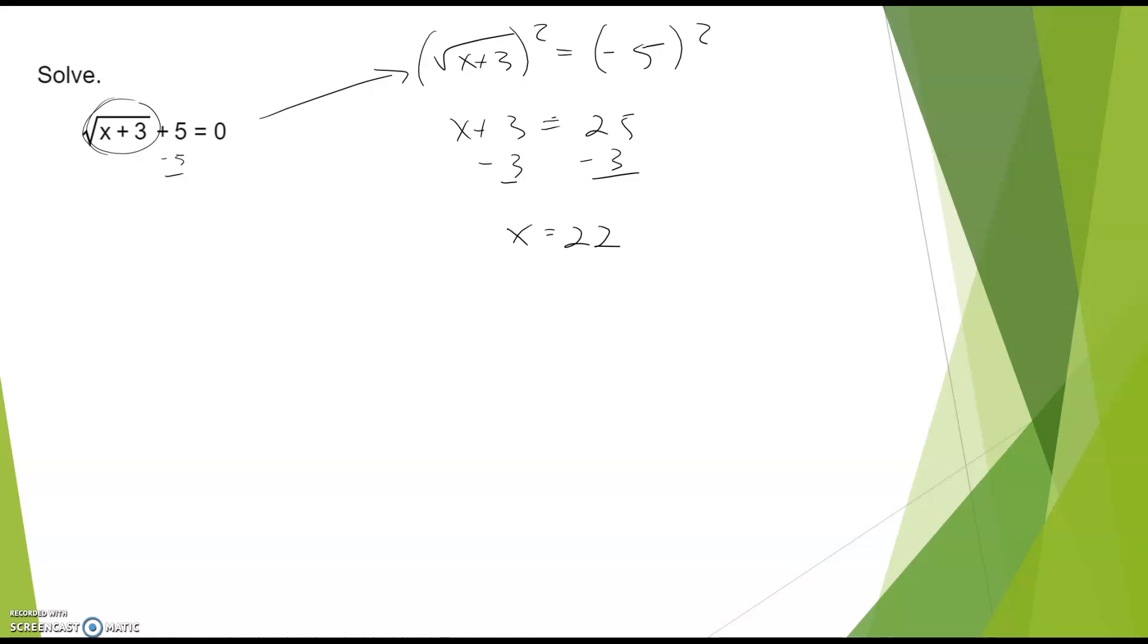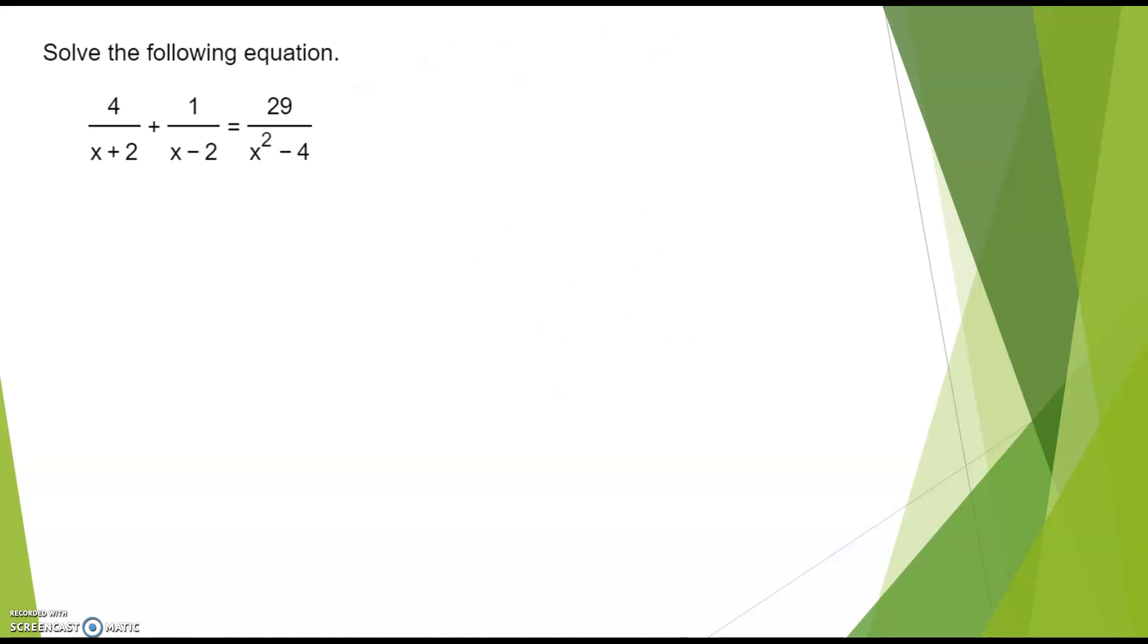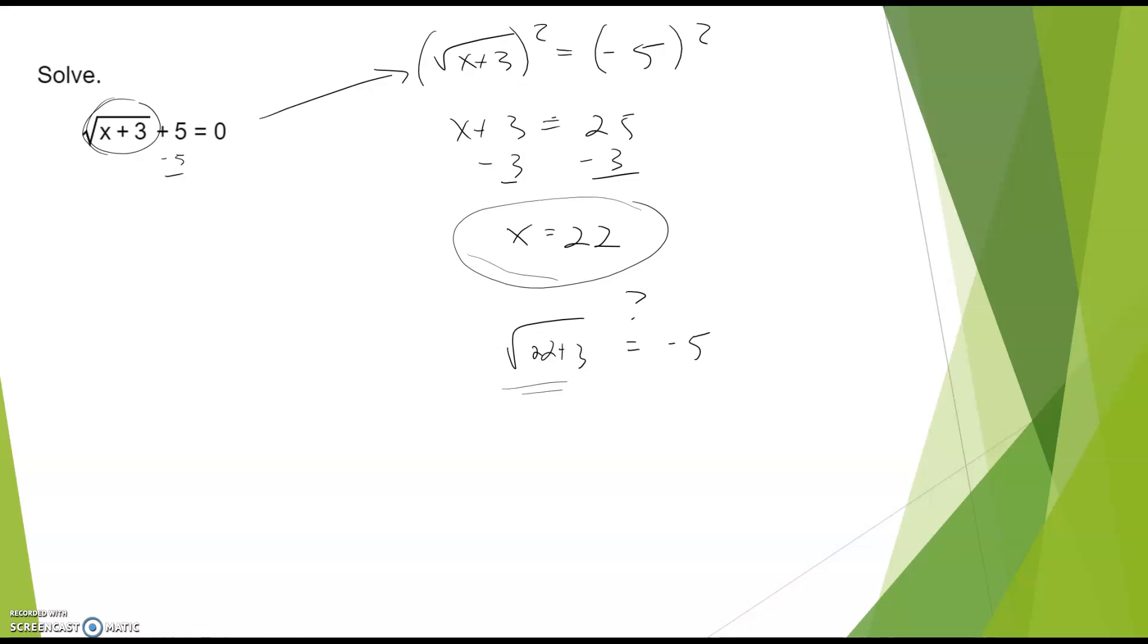Now, you might have recognized the problem here. If I were to plug this back in, that's not true, right? The principal root square root of 25 is positive 5. So that's a problem. And we only want to check our answers with these root equations and also with these equations that I'm going to get to next to make sure we don't have a domain issue.